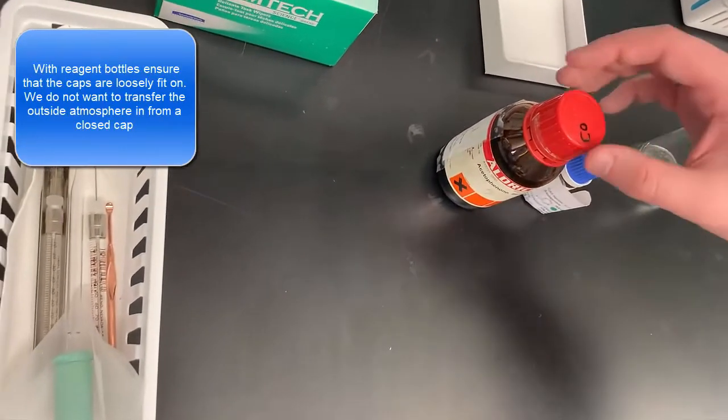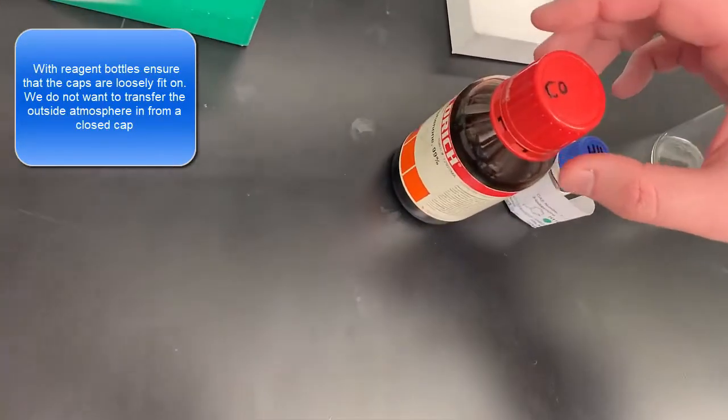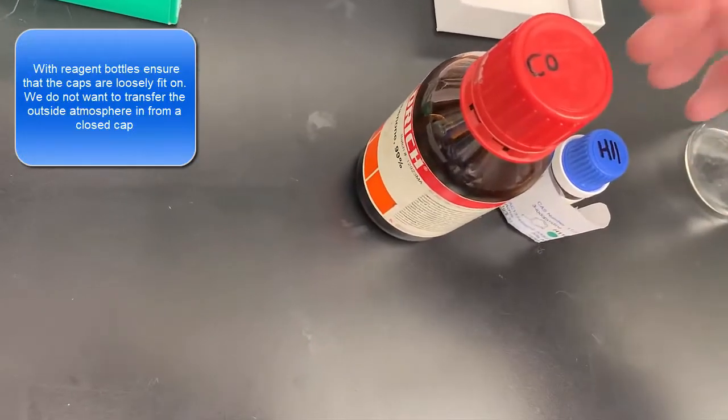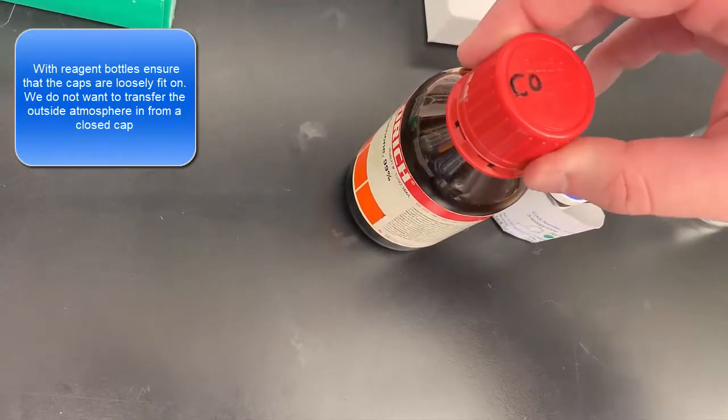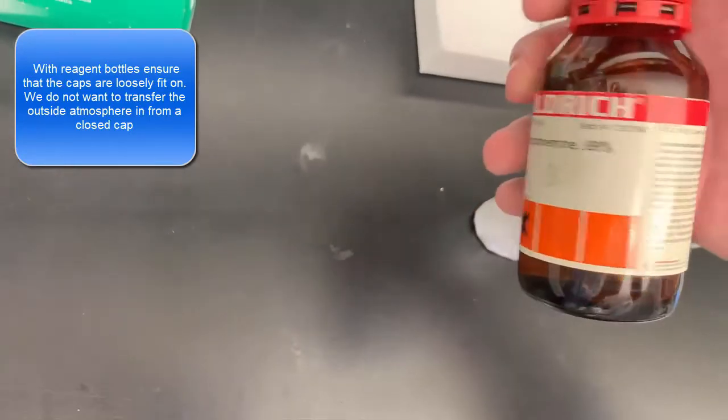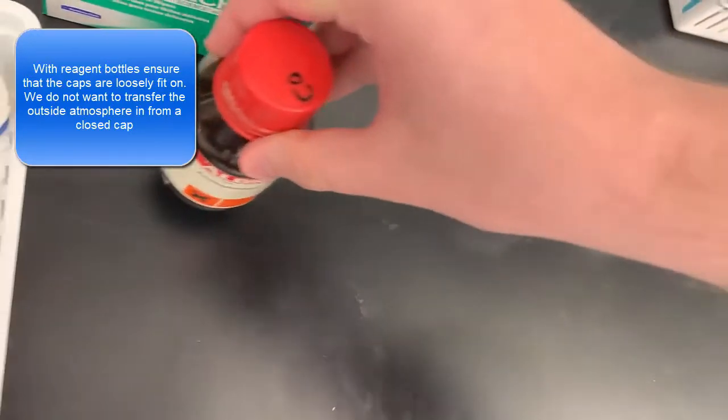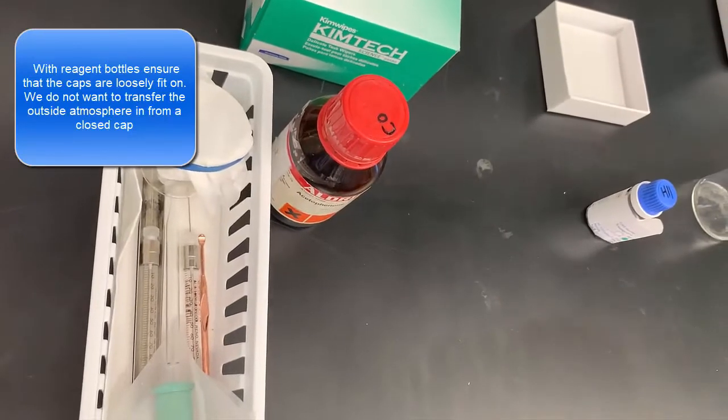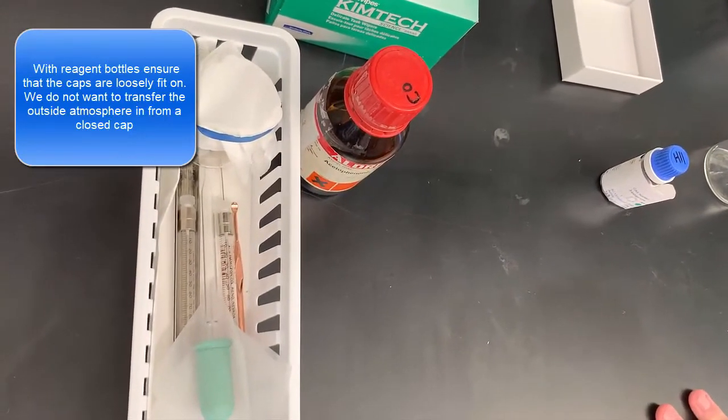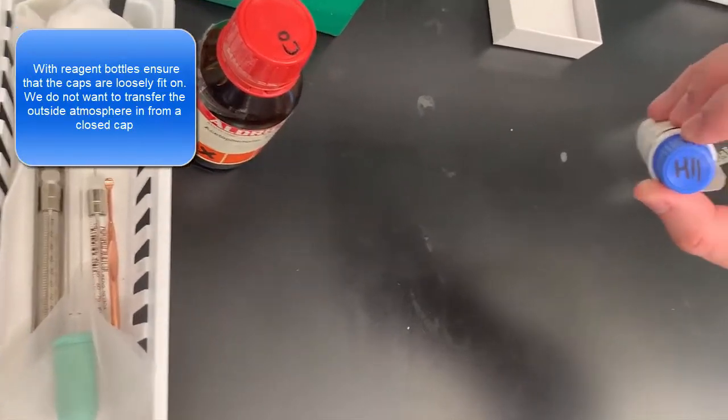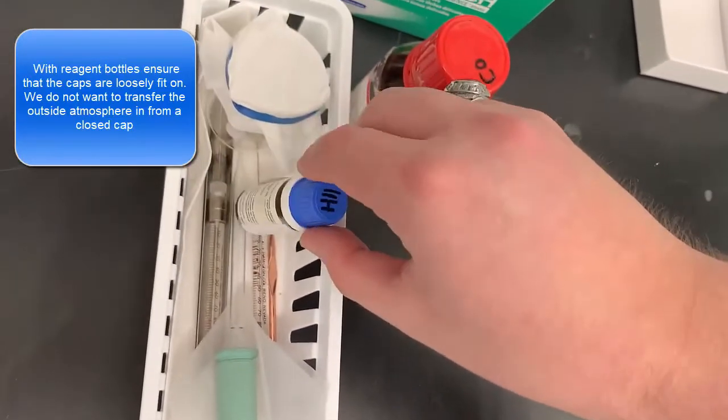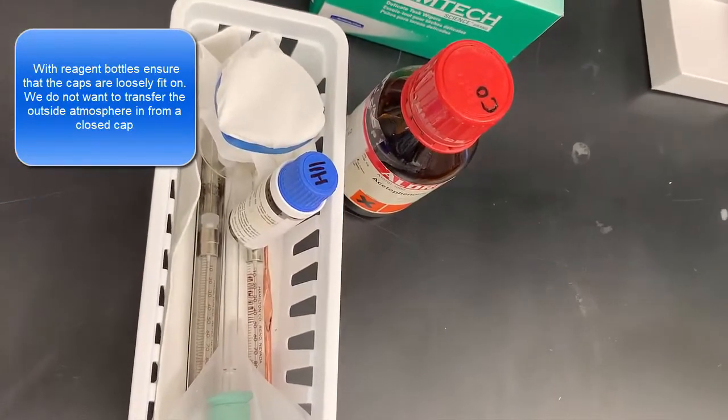Finally, if you have any reagents you need to bring into the glove box that are not already inside, you will need to bring those in with you as well. If they're very large, like this large bottle of C0, you can leave it outside of your bin and put it in after the bin is done. If it's something small, like this bottle of H11, you can place that inside your bin with everything else.